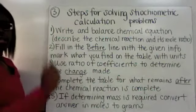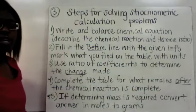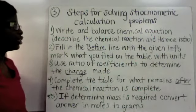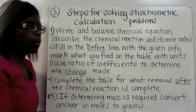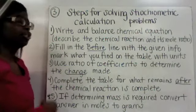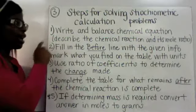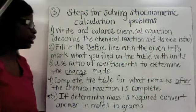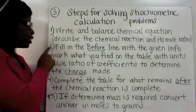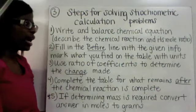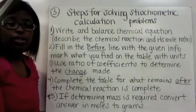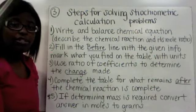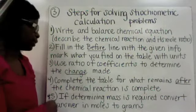These are now the steps for solving stoichiometric calculation problems. Step one: you're going to write and balance the chemical equation — that describes the chemical reaction and its mole ratios. Step two: you're going to fill in the before line with the given information, which is going to be found in the problem. So you're going to have to pay attention to what is stated in those word problems.